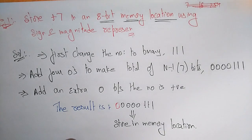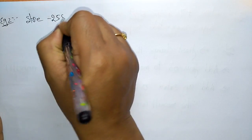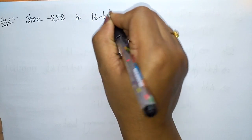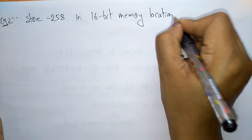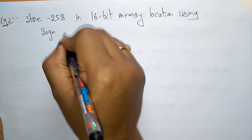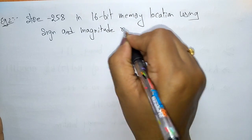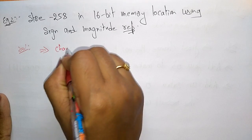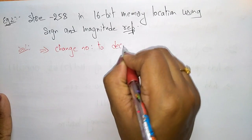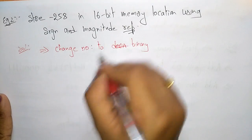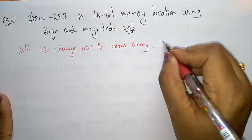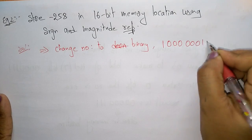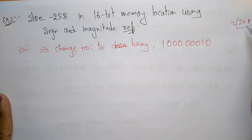Now let us explain sign and magnitude with a negative value. Example 2: store minus 258 in a 16-bit memory location using sign and magnitude representation. The first step is to convert 258 to binary. The binary of 258 is 1 0 0 0 0 0 0 1 0.